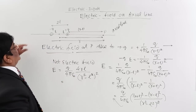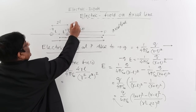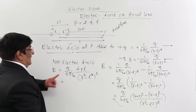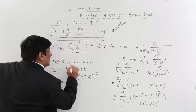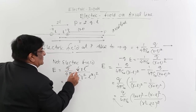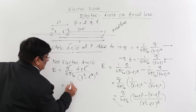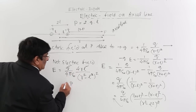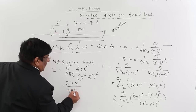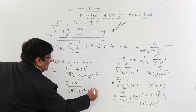Now we know a quantity called dipole moment, and its formula is P = 2QL. Here Q is present, L is present, and we take the factor 2 from the numerator. So in place of 2QL we write P. What remains is E = 2PR / (4πε₀) times 1/(R²−L²)². This is the actual electric field expression.